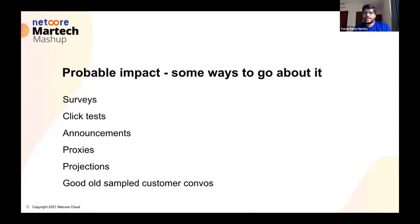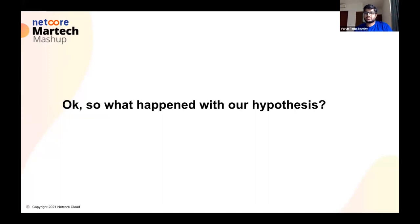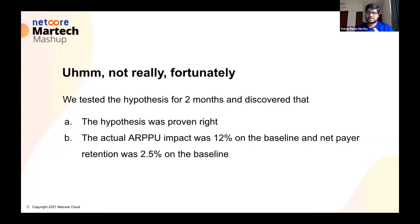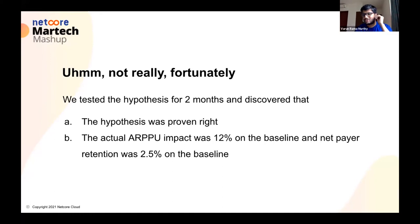Think of all of these as ways for you to figure out the probable impact of your hypothesis. If you don't even have a probable impact, then what are you testing? And why are you using your dev bandwidth, which is already in charge? This is how we arrived at the hypothesis of subscription giving a 5% jump on ARPPU. What actually happened? Thankfully, we tested the hypothesis for two months and discovered that the hypothesis was proven right. The actual increase in ARPPU was 12% on the baseline, and the net payer retention was 2.4% on top of the baseline. This was one of those good scenarios — for every good scenario, there are multiple examples of hypotheses that did not work out, and that's not bad. This is why hypothesis is probably the most foundational bedrock of good product management.